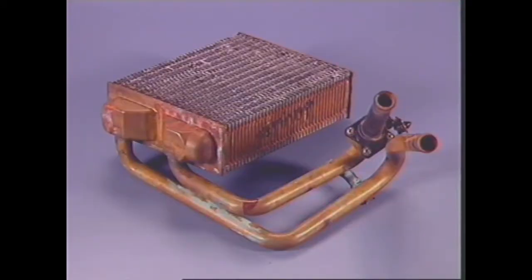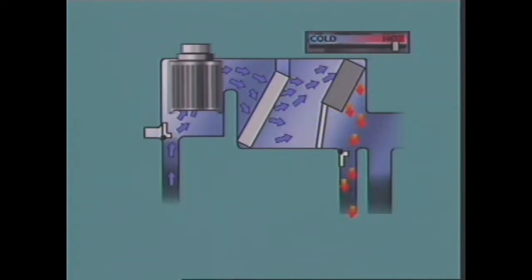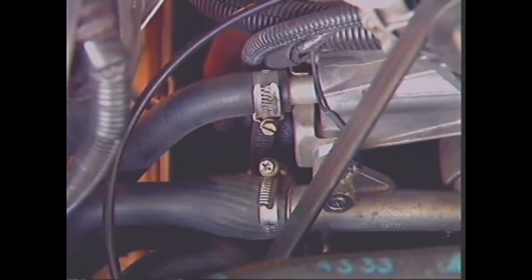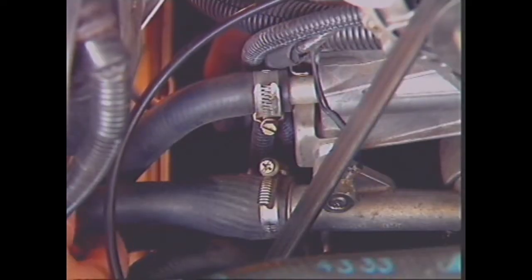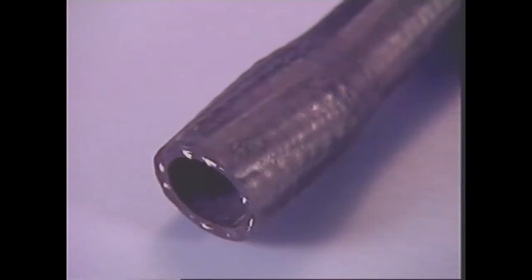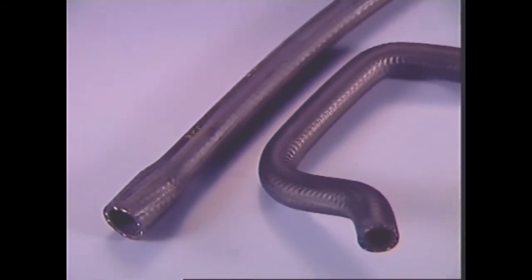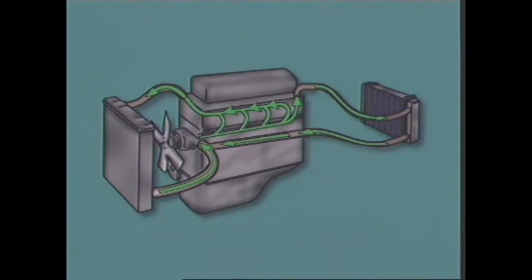The heater core is a small radiator consisting of tubes, fins and tanks, mounted under the dash panel inside the air plenum chamber where air can be passed across the core fins and into the vehicle interior. The heater core is connected to the engine's cooling system by flexible rubber hoses which allow for movement and reduce engine noise and vibration transmitted into the passenger compartment. The rubber hoses are fabric reinforced to resist cooling system pressure and temperature.